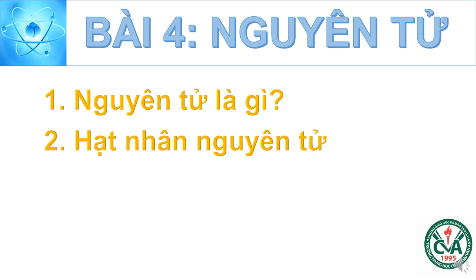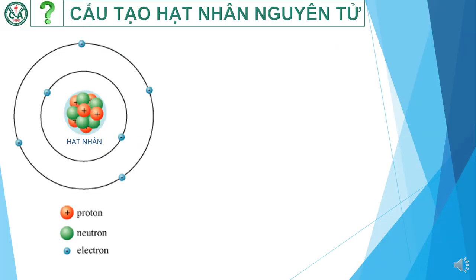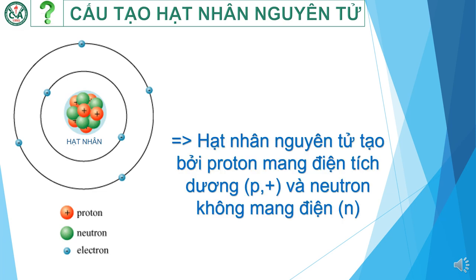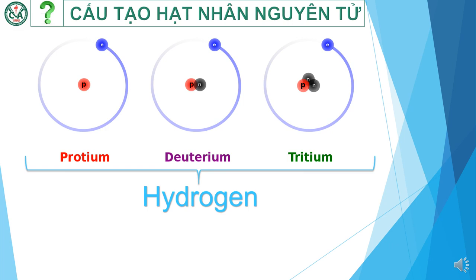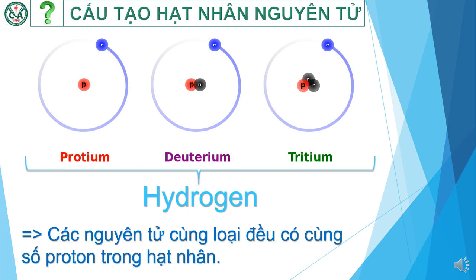Nội dung tiếp theo tìm hiểu về hạt nhân nguyên tử. Khi xét cấu tạo hạt nhân nguyên tử, người ta thấy hạt nhân nguyên tử được tạo thành từ 2 loại hạt nhỏ hơn là proton và neutron. Trong đó, proton ký hiệu là P mang điện tích dương; còn neutron ký hiệu N không mang điện. Xét 3 nguyên tử: protium, deuterium, tritium — 3 nguyên tử này đều có 1 proton trong hạt nhân và đều thuộc cùng loại nguyên tử hydrogen. Vậy các em cần nhớ: các nguyên tử cùng loại đều có cùng số proton trong hạt nhân.